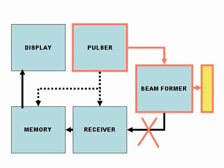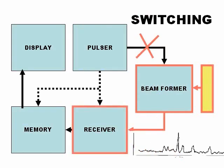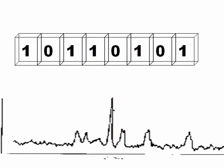The pulsar and beam former is one part. When the electric voltage is produced, the beam former makes the shape of the beam. One function is switching, and when the echo comes back it is not sent to the pulser — it goes directly to the computer where it is digitalized. Digitalize means the information is changed into binary numbers, the numbers that computers use.